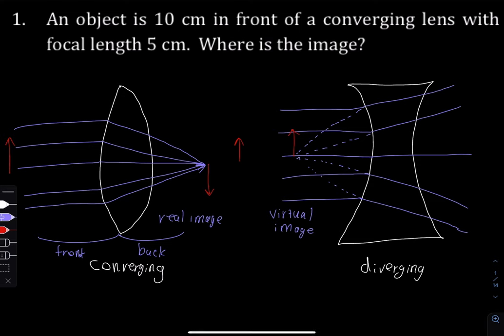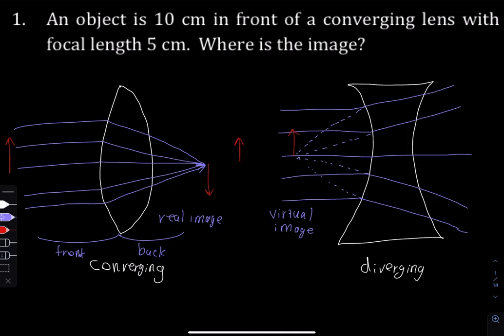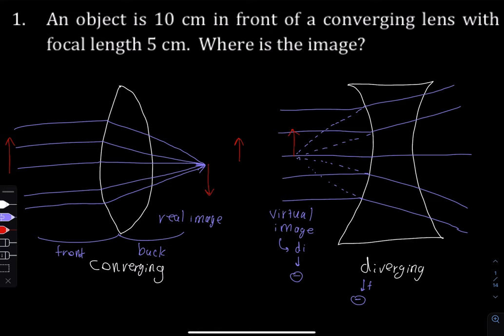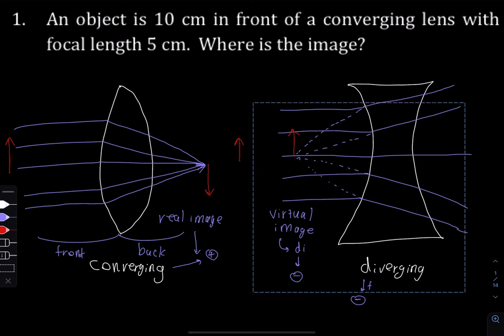Now in the equations, by convention the virtual image — when we calculate its distance from the middle of the lens — the distance of the image is going to be negative, and the focal length of a diverging lens is also going to be negative. For real images in a converging lens, it's going to be positive. In this case we have a converging lens, so I'll show you where that shows up in the equations.